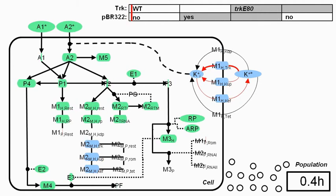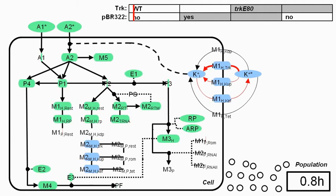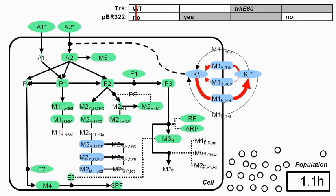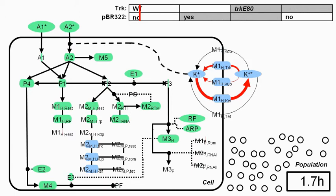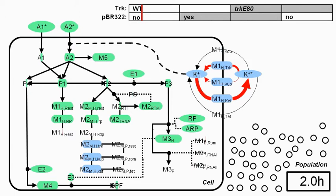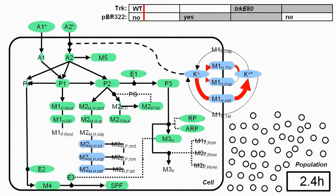As the animation starts, you can see that the model is quite dynamic, as is evident by the changing sizes of the boxes. Each box in the cell corresponds to one state variable. Basic host metabolism components are green, and potassium components are blue.